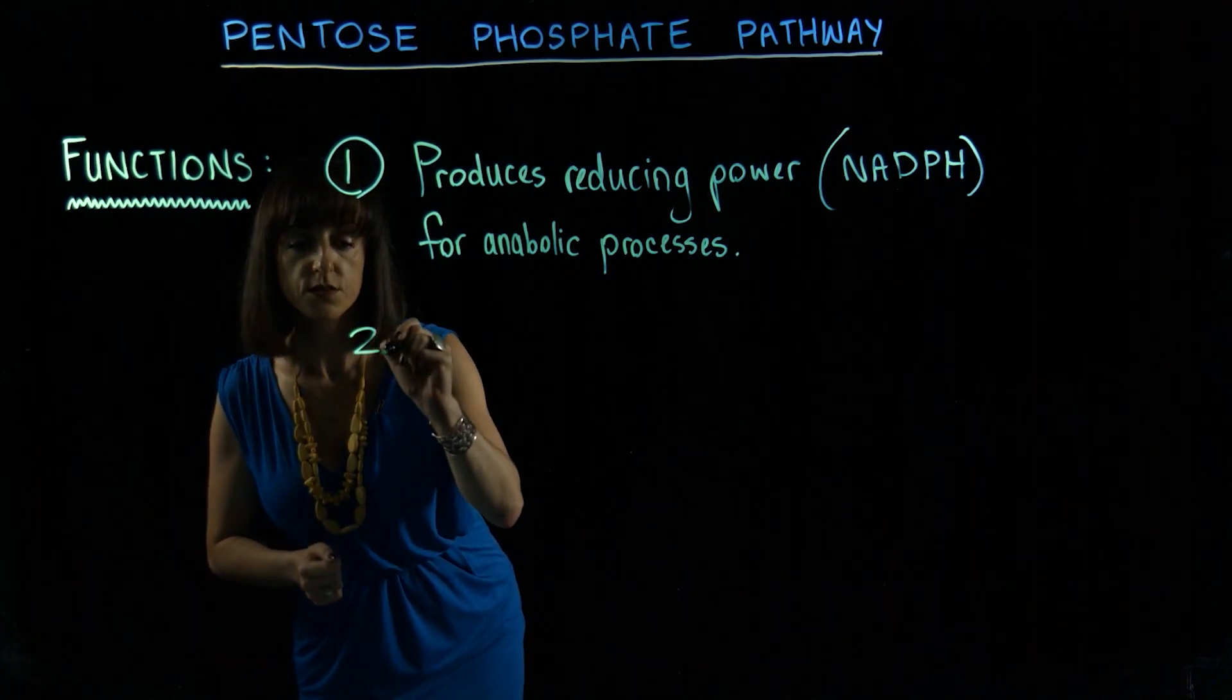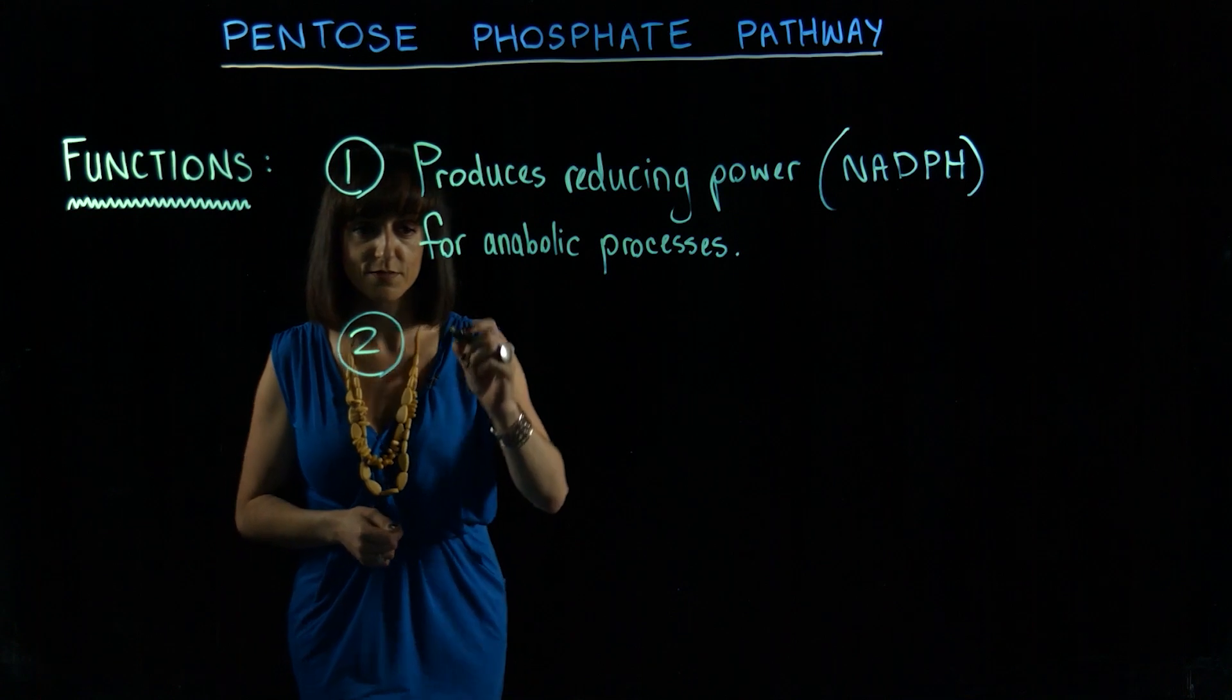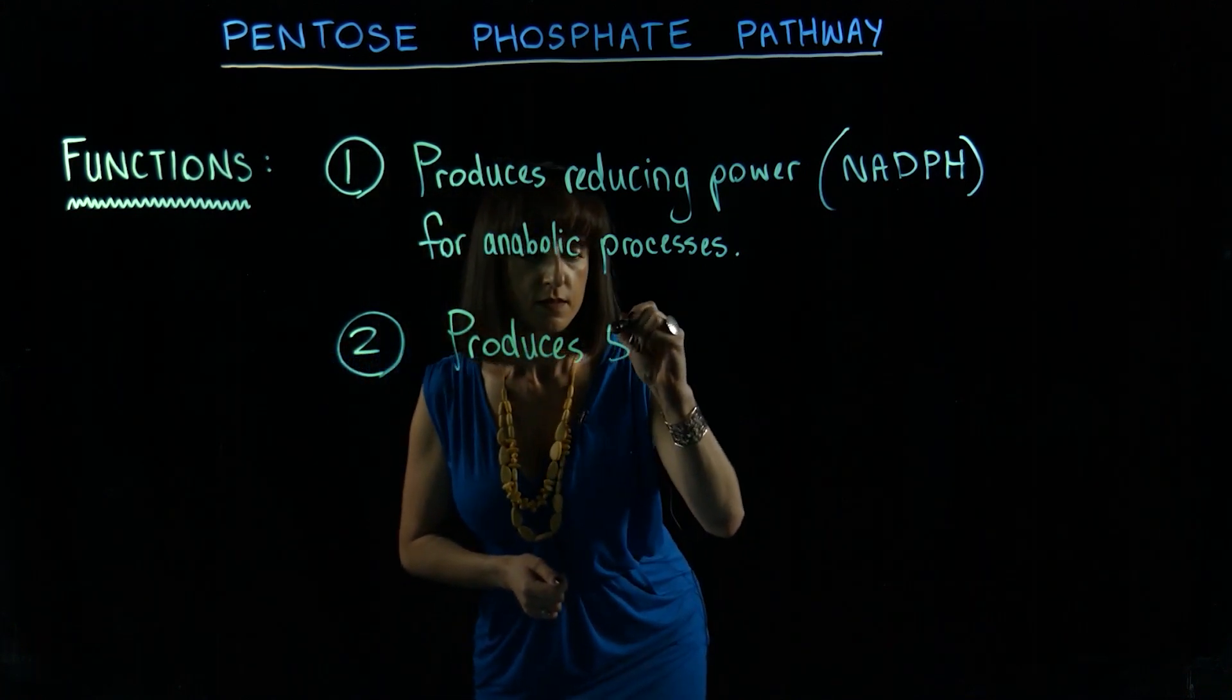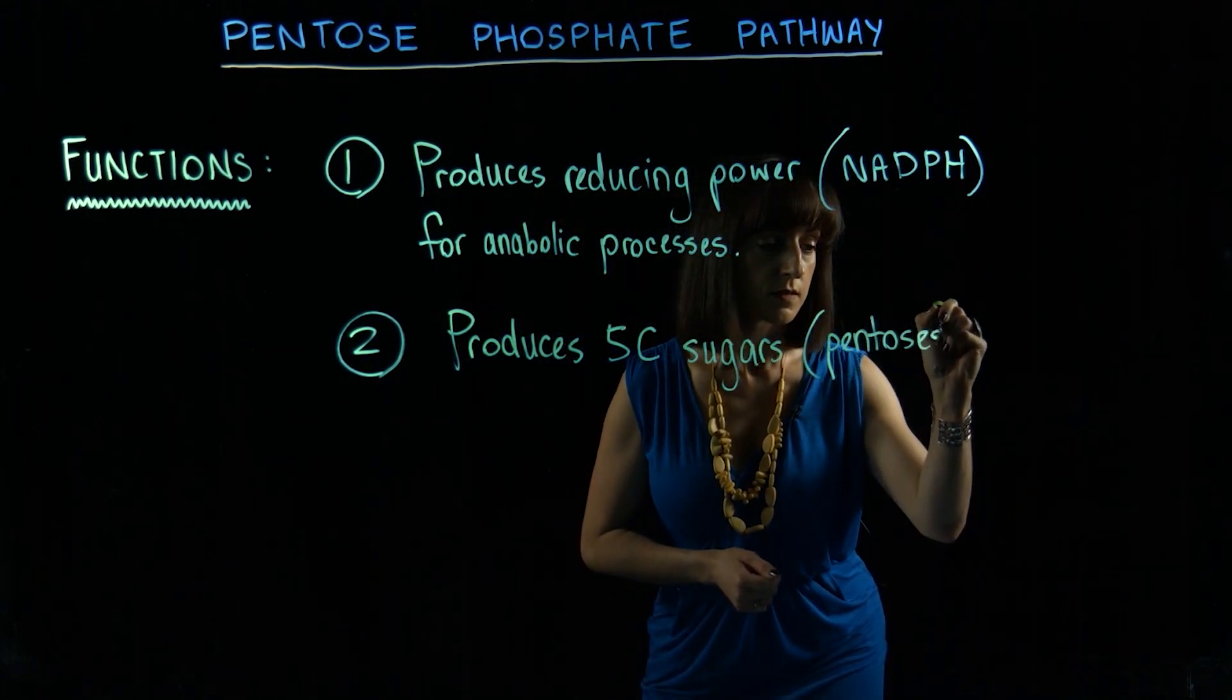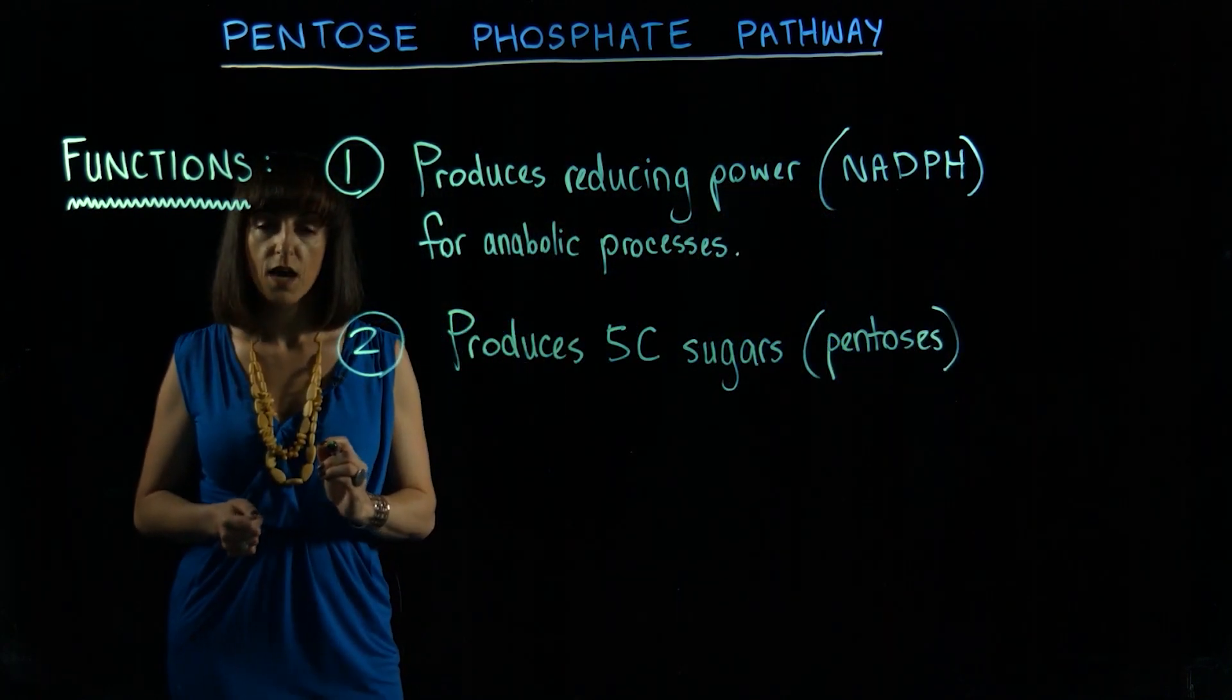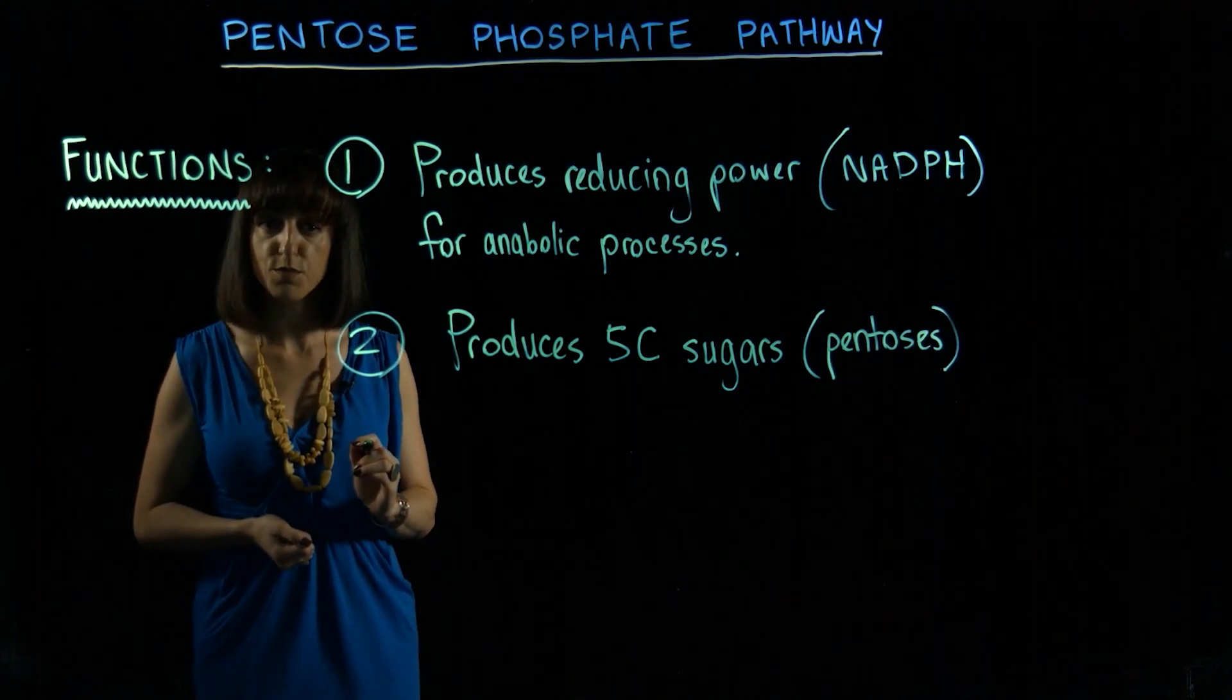The second really important function of the pentose phosphate pathway is that it also produces five carbon sugars. Now these five carbon sugars or pentoses are used for nucleotide synthesis and also aromatic amino acid synthesis among other processes in the cell.